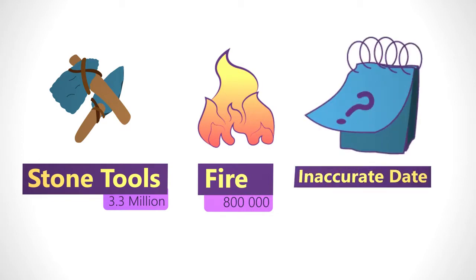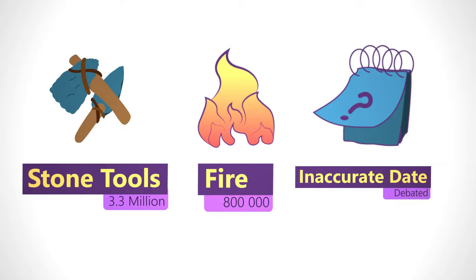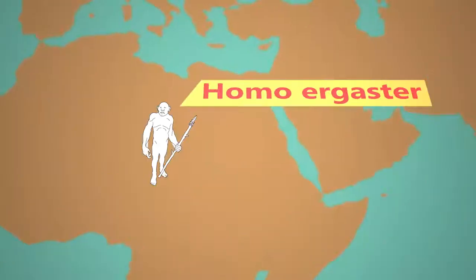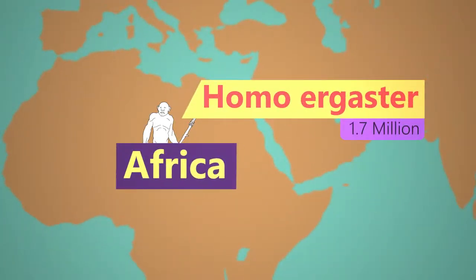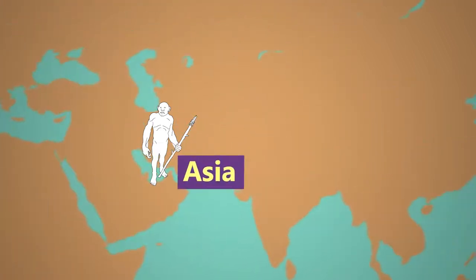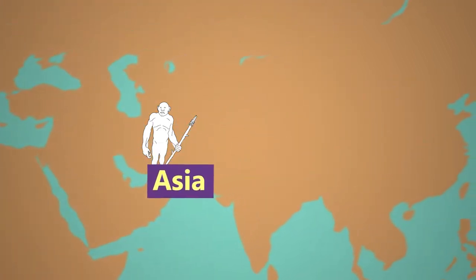As you can tell, accurate dates are hard to settle on and are always changing and being debated. Homo ergaster did leave Africa and colonized Asia in small populations, spreading from Turkey to China.